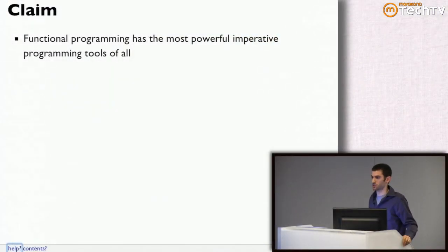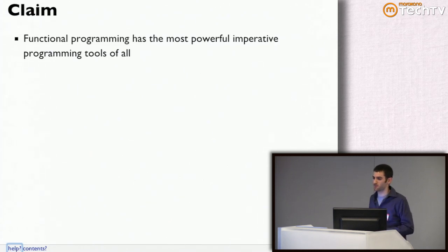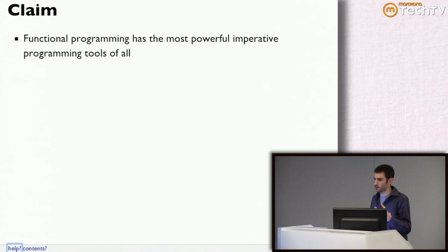I'd like to make a bold claim here, which is that functional programming actually provides the most powerful tools for imperative programming out of any paradigm. The general idea is that when you're programming functionally, you're forced to move from directly performing side effects yourself to constructing composable descriptions of programs that, when glued together, will result in some imperative program that does whatever you want. It's this moving from doing the actions yourself to describing a little imperative language and assembling it. That ends up being a very powerful approach.